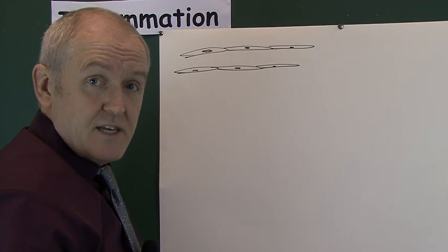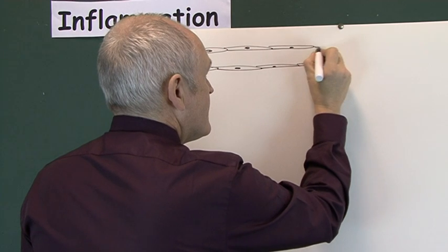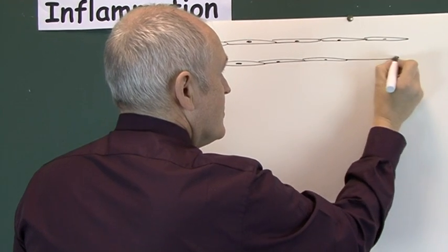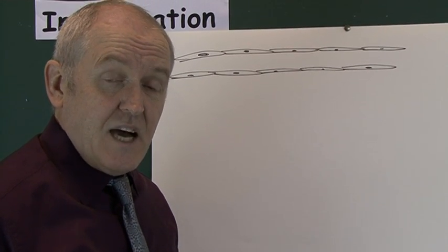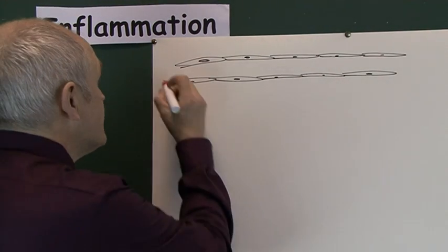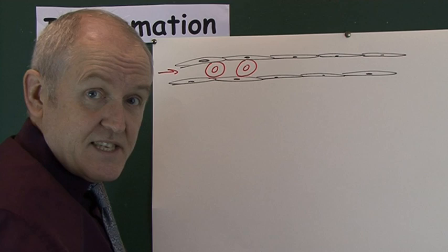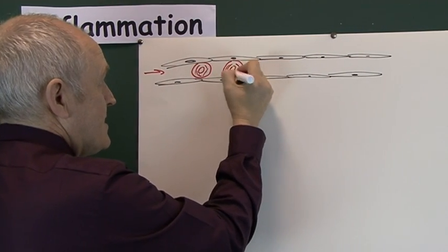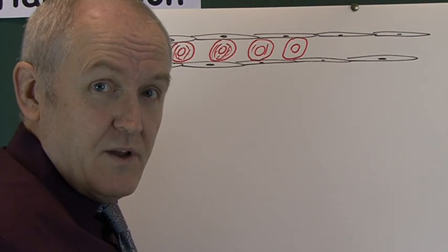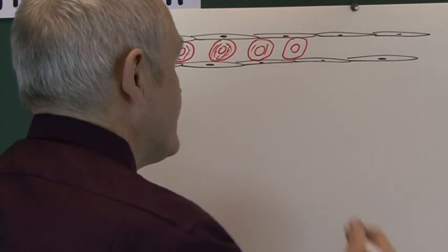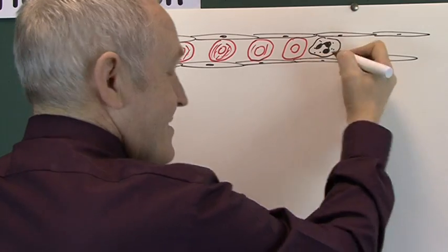Blood goes into the capillary from an arteriole, passes through the capillary, and leaves via a venule. Capillaries are very narrow vessels — in the smaller capillaries only one red cell can fit through at a time. The red cells are biconcave discs, darker on the outside and lighter on the inside, going through a normal non-inflamed capillary. From time to time a white cell also passes through — here's a neutrophil going through.